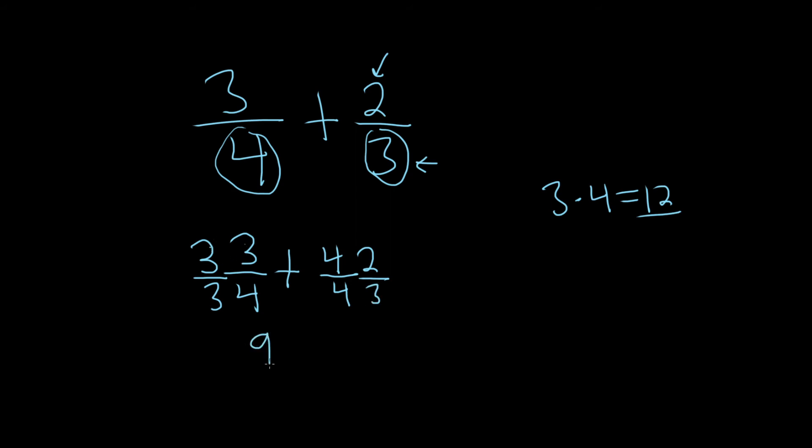So 3 times 3 is 9, over 3 times 4 is 12. Then 4 times 2 is 8, over 4 times 3 is 12. Good stuff. All right, very good.